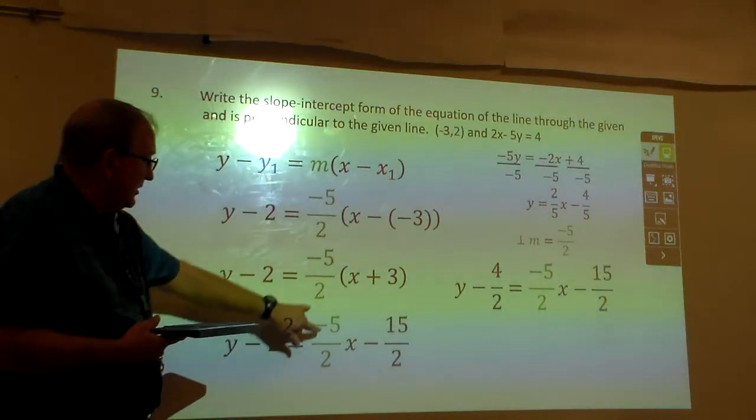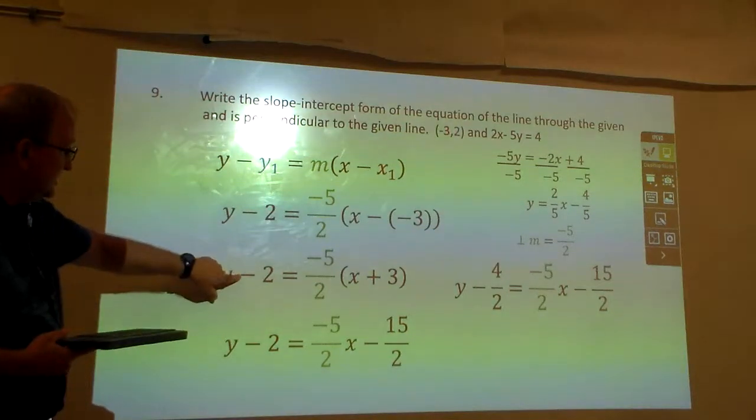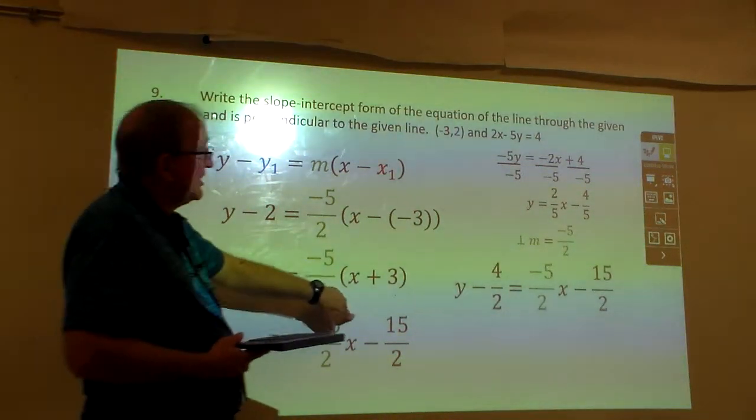I've got to work out ahead of here. This is negative 5x. That's going to be minus 15 halves. This is minus 2, which is the same as what?